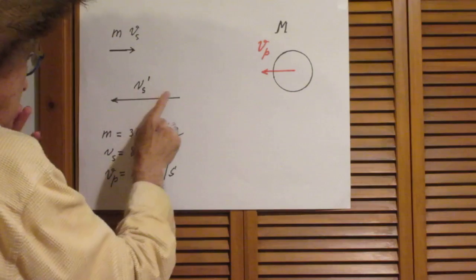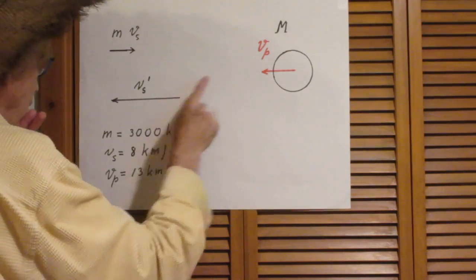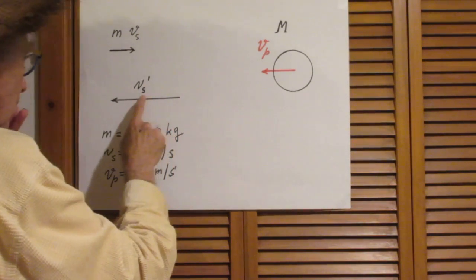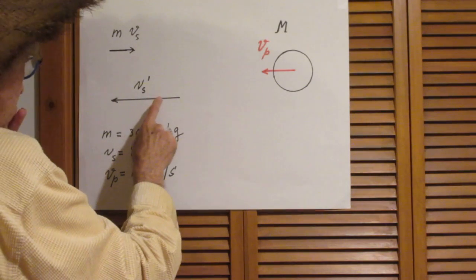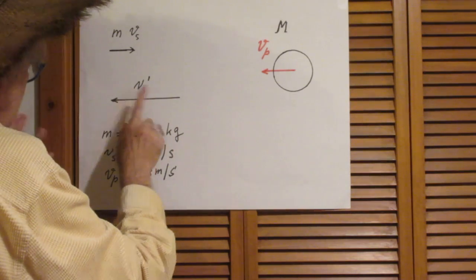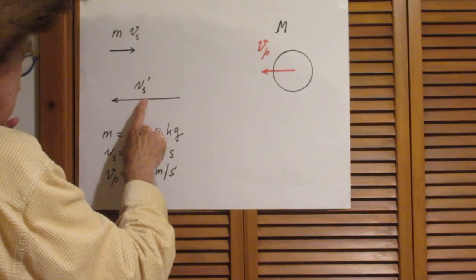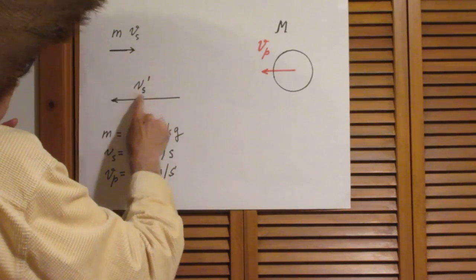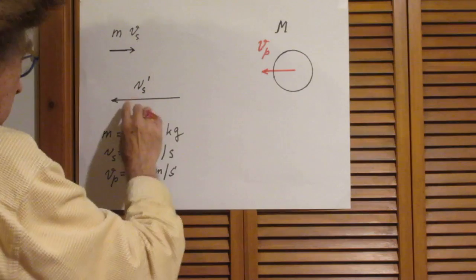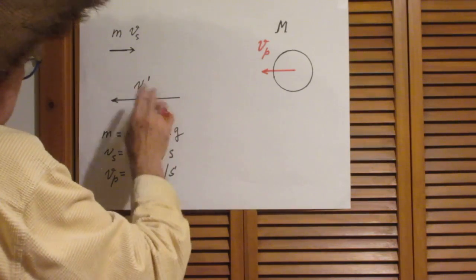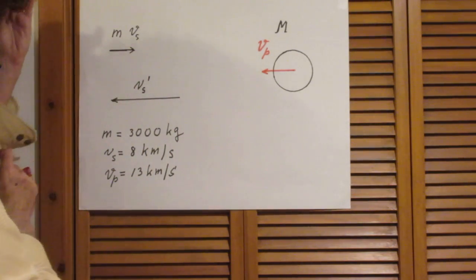And then ultimately when it is very very far away from the planet, the speed will be Vs prime and it will be larger than this. And again because it is so far away, the gravitational potential energy can be neglected. So its kinetic energy is entirely one half m Vs prime squared, which is way larger than the gravitational potential energy.